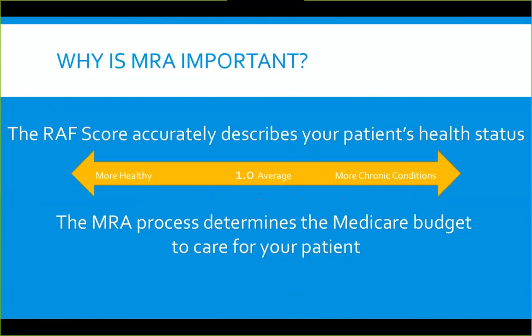The RAF score accurately describes your patient's health status. A score of 1.0 is the midpoint — lower scores indicate a healthier patient, higher scores indicate more chronic conditions. Oklahoma's average Medicare score has been less than 1.0 — around 0.89 about four years ago — even though we'd anticipate our patients have more chronic conditions like diabetes and hypertension.